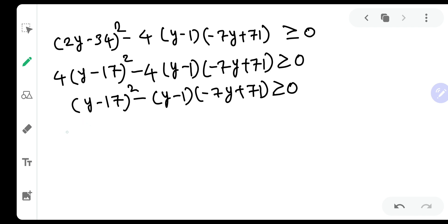Now let us just square it. So this will be y square minus 34y plus 289 minus. Now be very careful while multiplying. So minus y into minus 7y will be plus 7y square. y into 71 will be 71y but there is a minus, so minus 71y. Minus 1 into minus 7y will be plus 7y, but there is a minus, so it will be minus 7y. Now moving a little further, minus y minus 1 into 71 will be minus 71 and there is a minus, so it will be plus 71 greater than or equal to 0.